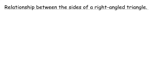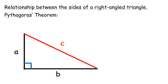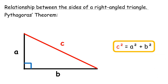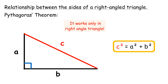Relationship Between the Sides of a Right-Angled Triangle. Pythagoras Theorem: in a right-angled triangle, the square of the hypotenuse is equal to the sum of the squares of the other two sides. Pythagoras Theorem only works in a right-angled triangle.